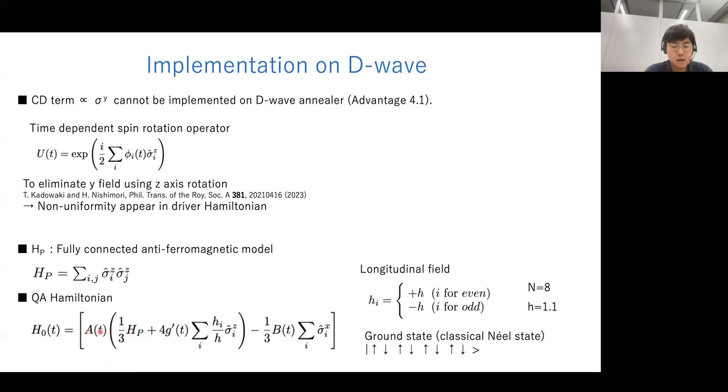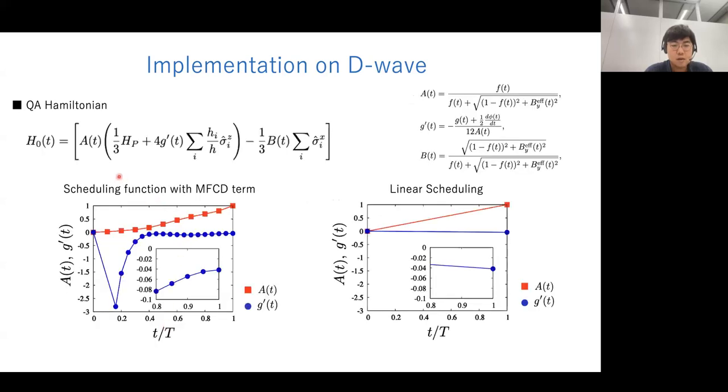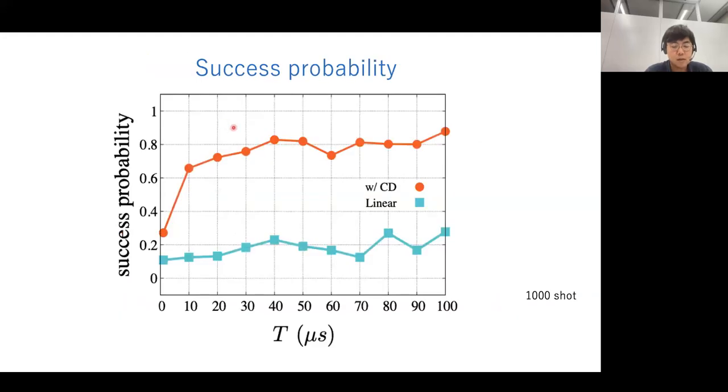After this spin rotation, the Hamiltonian is given by this form, where A and G prime is scheduling function, which the scheduling function reflects the time-dependence of the CD field. We also use this linear schedule to compare the performance of the mean field CD term. This is the result. This result shows that the success probabilities becomes higher due to our mean field CD term compared to the linear scheduling.